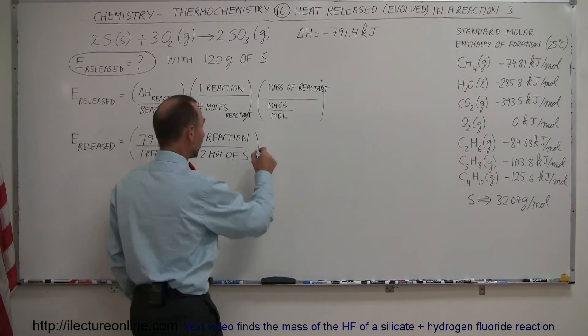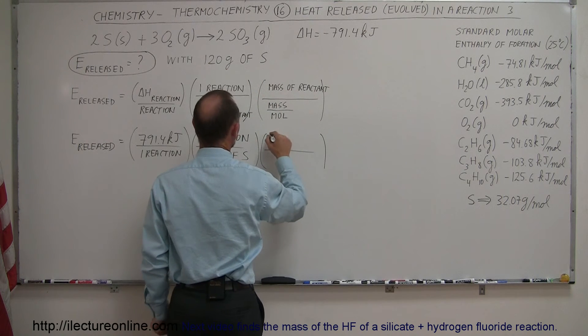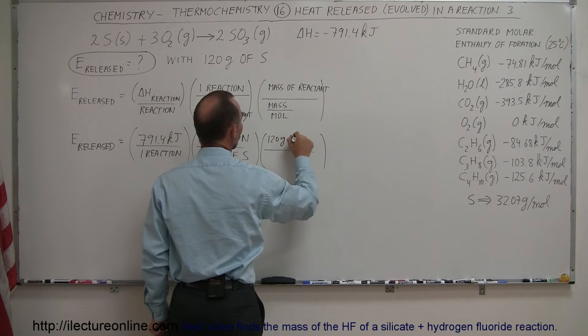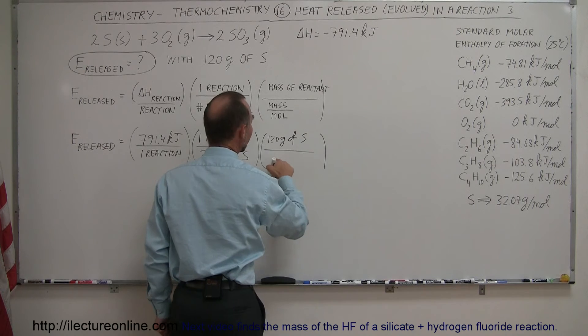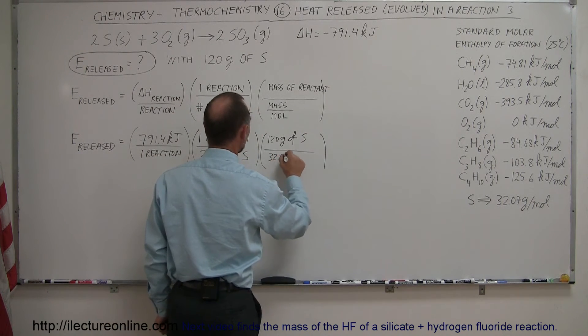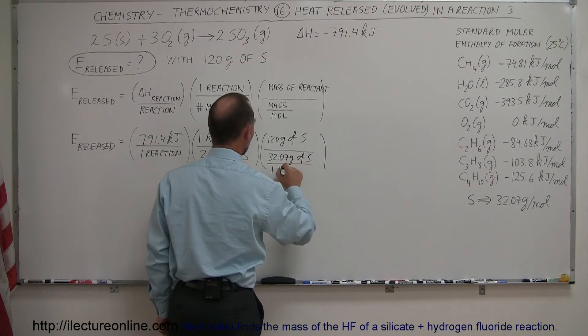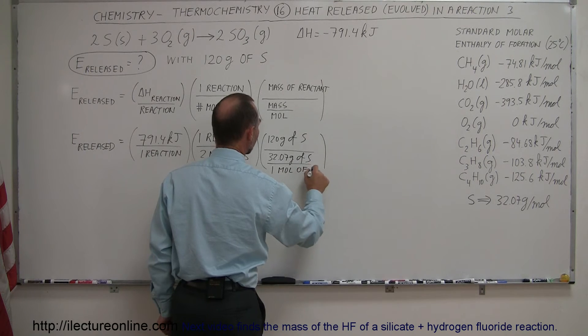Now we have to account for the mass in our sample. So the mass in our sample is 120 grams. So we have 120 grams of sulfur and we divide it by the molar mass of sulfur. The molar mass of sulfur is 32.07 grams of sulfur divided by 1 mole of sulfur.